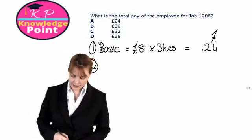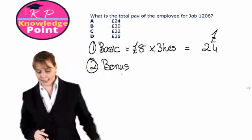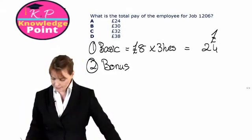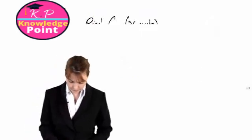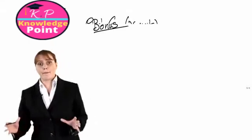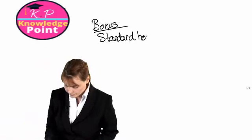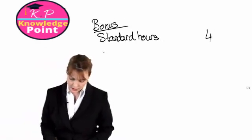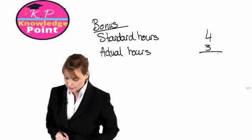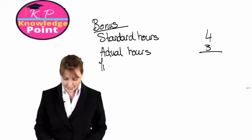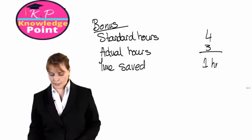The second thing we need to add on is their bonus. So we will just do a quick calculation to work out what their bonus will be. To calculate the bonus, we are going to look at the standard hours, which were 4. And we will compare this to the actual hours, which were 3. The difference, or the time saved, which is the difference between the two, is 1 hour.